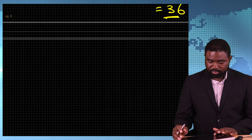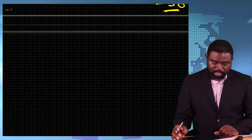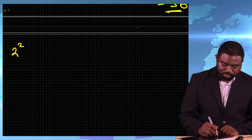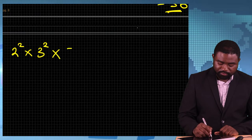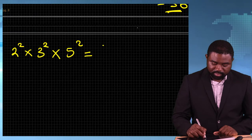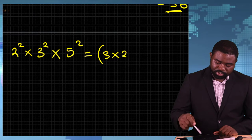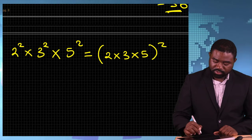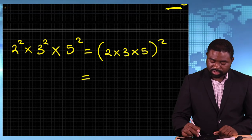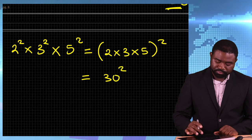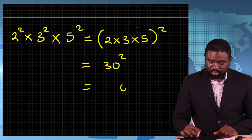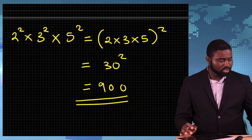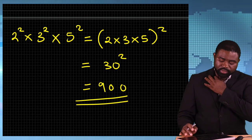Another example: let's say you want to multiply 2 raised to the power 2, multiplied by 3 raised to the power 2, multiplied by 5 raised to the power 2. This is the same as 2 times 3 times 5, all raised to the power 2. So 2 times 3 times 5 is 30, all raised to the power 2, and you can simplify to get the answer 900. It's a very nice way to really drill down and simplify things.